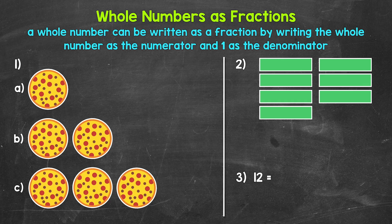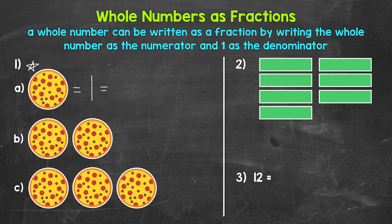For number one, we're going to write one, two, and three as fractions using pizzas to help visualize. For A, we have one whole pizza divided into just one part. So one is our denominator, and we have one whole pizza, so one is our numerator as well. One over one is one as a fraction.